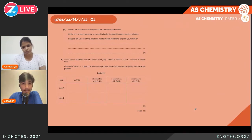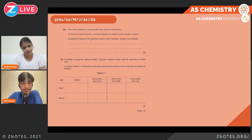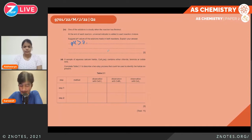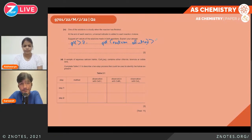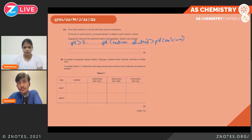One of the solutions is cloudy when the reaction has finished. Universal indicator is added to each reaction mixture and we need to suggest pH values. Since both Ra(OH)₂ and Ca(OH)₂ are alkaline solutions, the pH is greater than 7 for both. However, the pH of the radium solution should be greater than that of the calcium solution, because radium hydroxide is more soluble in water. Greater solubility means more ionization and a greater concentration of hydroxide ions, causing a higher pH.